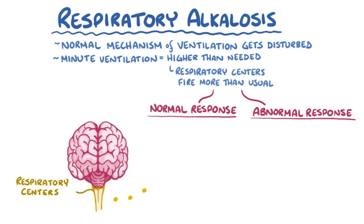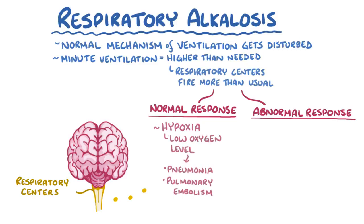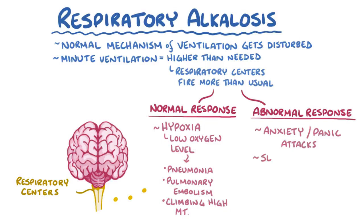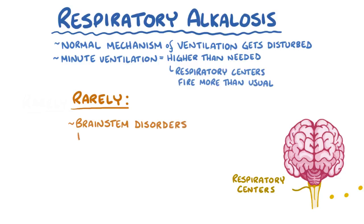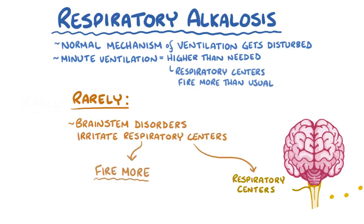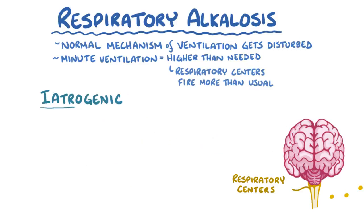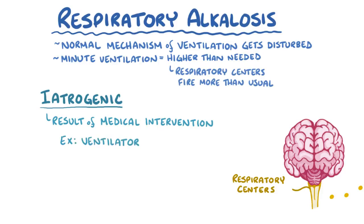Increased ventilation is a normal response to things like hypoxia, which is a low oxygen level that happens with diseases like pneumonia or a pulmonary embolism, or even when a person climbs a high mountain like Mount Everest. Increased ventilation can also be an abnormal response that sometimes happens in situations like anxiety and panic attacks, as well as in sepsis or in overdoses with salicylates. Rarely, brainstem disorders can irritate the respiratory centers and make them fire more. Sometimes, increased minute ventilation is iatrogenic, meaning it's a result of a medical intervention — for example, a person might be intubated and on a ventilator, and if the ventilator settings aren't correct, it can cause a respiratory alkalosis.